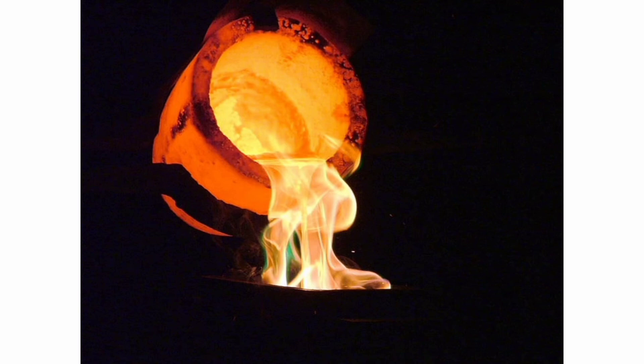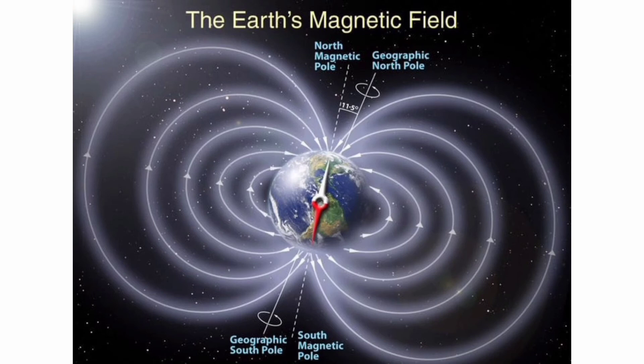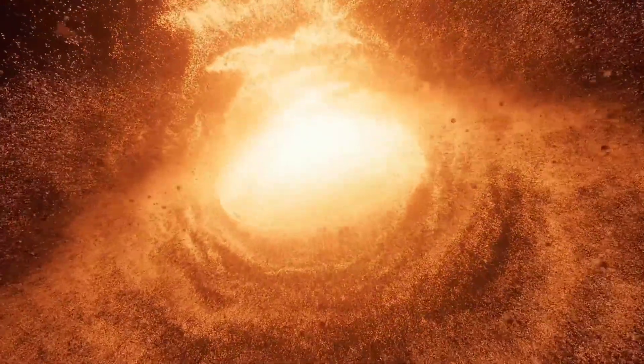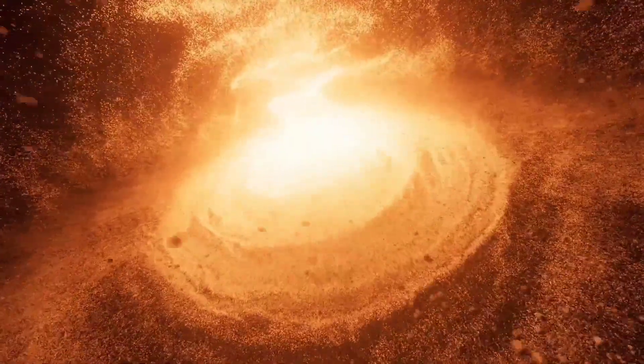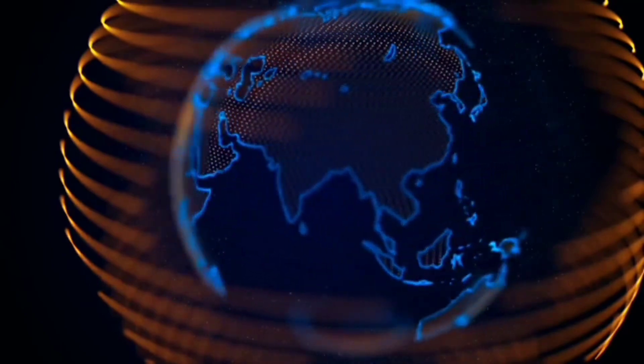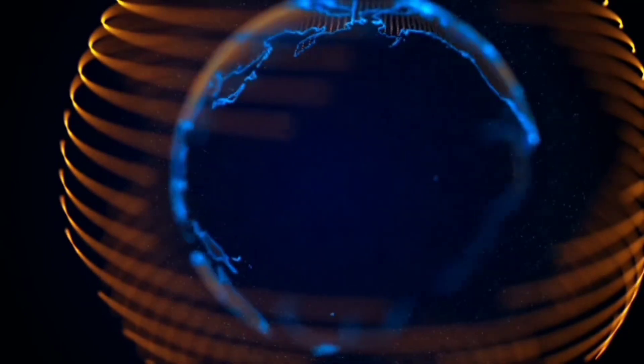The outer core is a liquid layer below the mantle and is responsible for Earth's magnetic field. The inner core is the very center of the Earth. It consists of iron and nickel. The inner core is under intense pressure, which keeps it solid despite the high temperature.